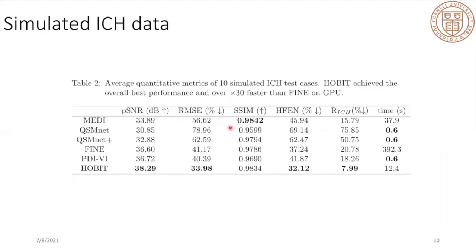For this quantitative comparison, our proposed hybrid optimization gives the best result. Compared to FINE, which has computation time on GPU of almost 400 seconds, HOBIT already takes about 12 seconds to generate the final result.